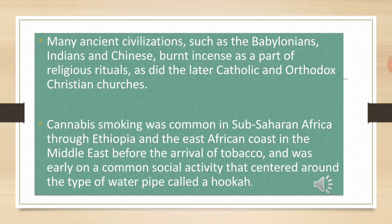The second point: cannabis is a leaf — you can say that cannabis is a flowering plant. There are many species that are used in medicines. In Africa, it was used in Ethiopia, East Africa, the Middle East, and alongside tobacco.